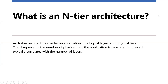What is an N-tier architecture? An N-tier architecture divides an application into logical layers and physical tiers. The N represents the number of physical tiers the application is separated into, which typically correlates with the number of layers. We could have a two-tier architecture or even a five-tier architecture, though it's common and often best to keep the number of tiers to four or less.